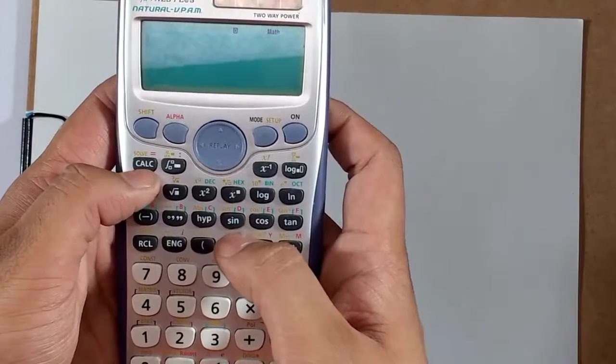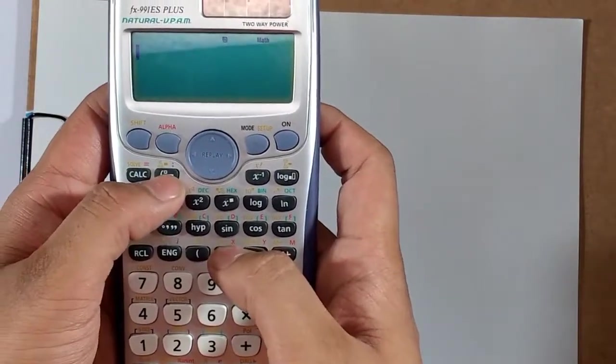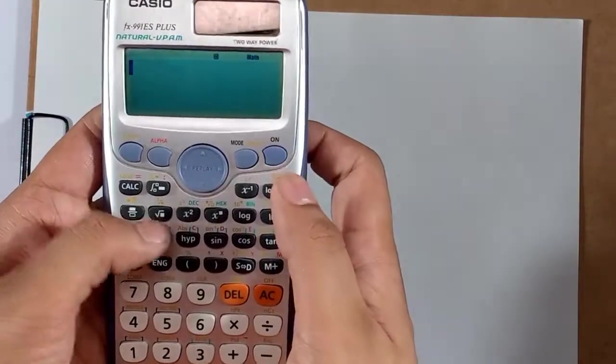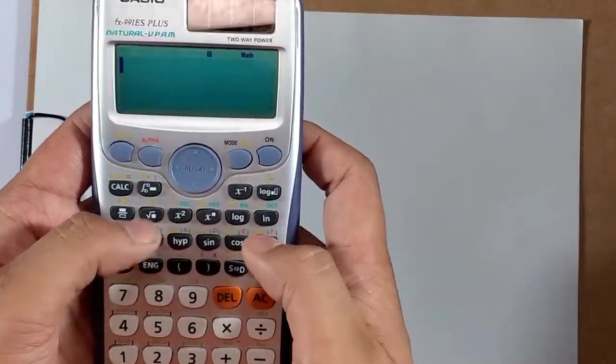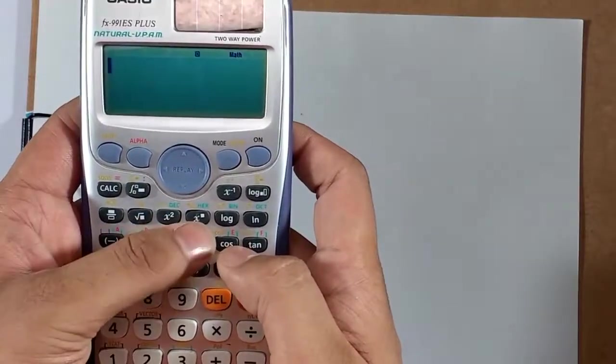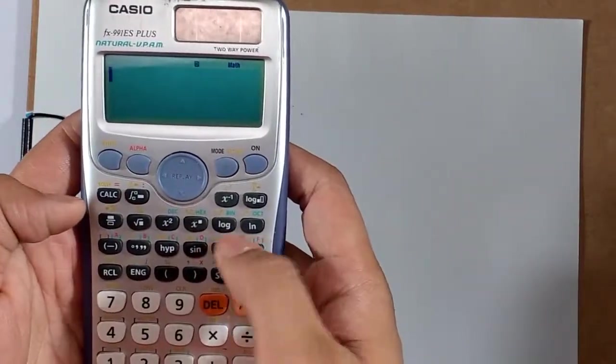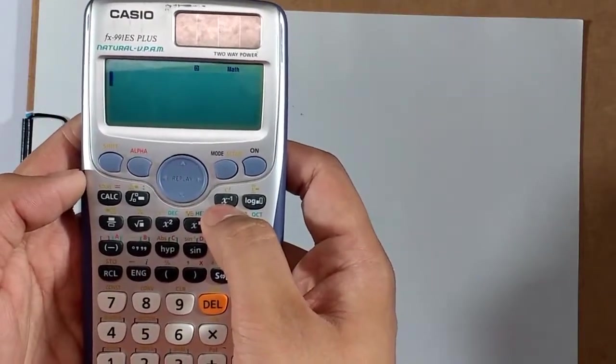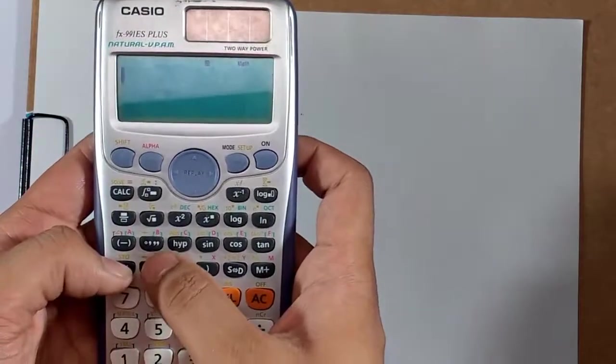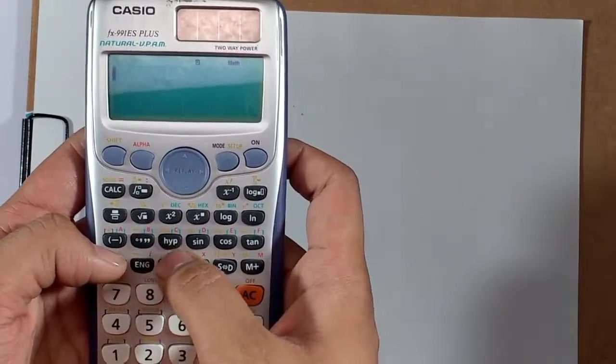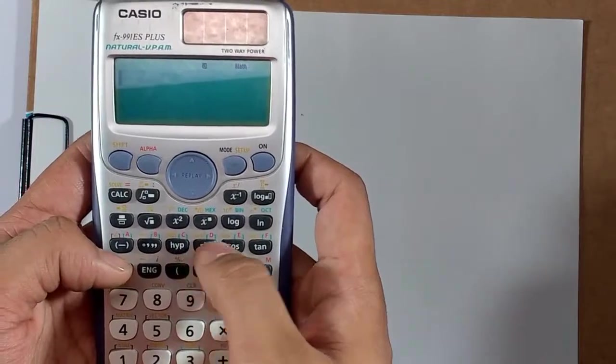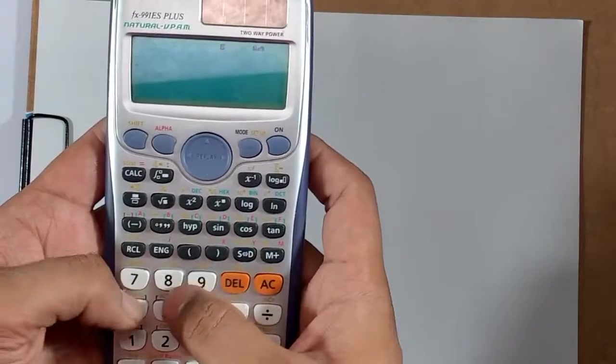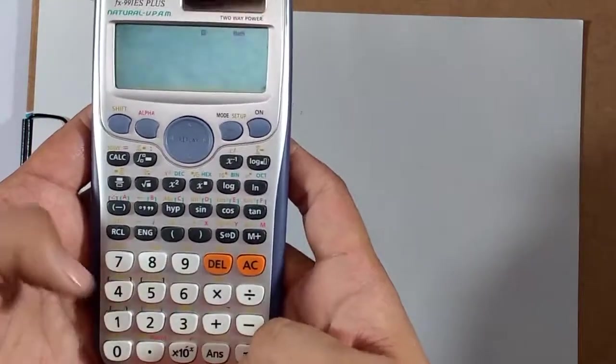This is the calc button which is used to solve equations, integration with limits. There's the fraction, under root, x square, x to the power anything, log, natural log, log to other base, inverse of x, decimal to degree minutes seconds, hyperbolic sine, cos, tan. It converts into decimal point. For example, 78 divided by 45 equals, this triggers the decimal into the fraction or anything you want.